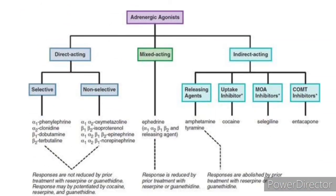Adrenergic agonists or sympathomimetic drugs act via three different mechanisms: directly on alpha and beta receptors, indirectly by increasing the amount of noradrenaline in the synapse, or as mixed-acting drugs having both actions.